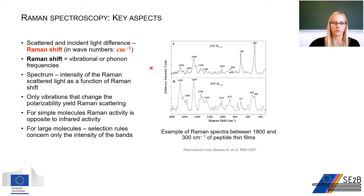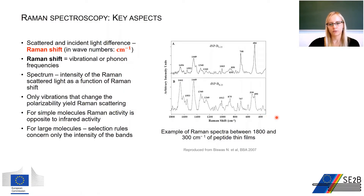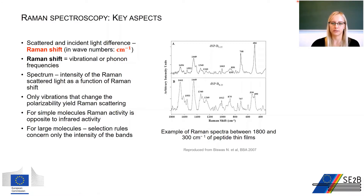In Raman spectroscopy we measure the energy change between scattered and incident light. This difference is called the Raman shift, which gives direct access to vibrational energy. Here you see an example Raman spectrum where scattering intensity is plotted as a function of Raman shift. However, for small molecules not all vibrational bands appear in the Raman spectrum due to selection rules, whereas for large molecules the main concern is the intensity of the bands. Selection rules are not discussed in this lecture.